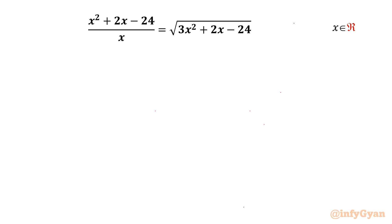Welcome back to Infigyan, my dear friends. Today in this video we are going to take up one tough looking radical equation. It is (x² + 2x - 24) / x = √(3x² + 2x - 24). x belongs to real numbers. Let us get started by considering the denominator cannot be 0.